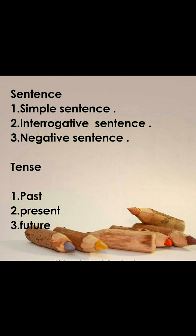The second type is the interrogative sentence, where we interrogate someone about what they are going to do. The third is the negative sentence, where we use 'not' — for example, 'I'm not coming with you' or 'I'm not going there.' So the three types are: simple/positive, interrogative, and negative.